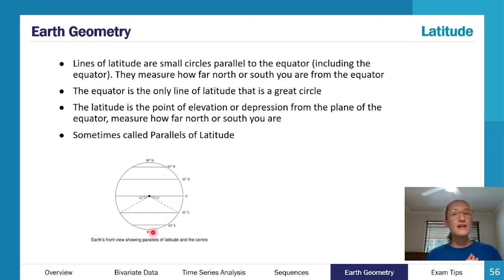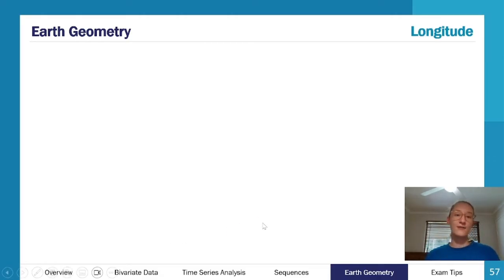The main takeaway I want you to have from this is that these circles tell you how far north a point is from the equator. So here we have the equator, and we can use these circles to measure how far north a point is on any point in the earth, or we can use them to measure how far south we are from the equator.